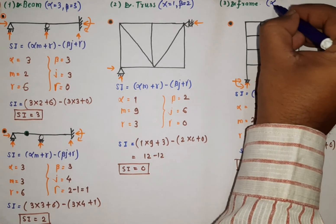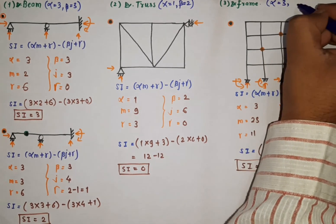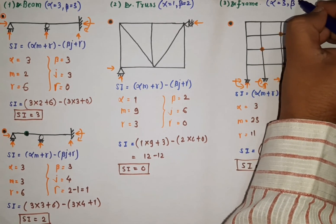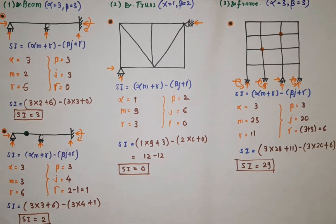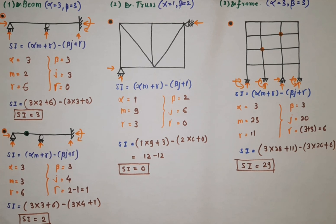So the static indeterminacy of this frame is 29. Always remember: for a frame, α = 3 and β = 3. Using the formula SI = αm + r - βj + γ, we can calculate the static indeterminacy of beams, trusses, and frames.